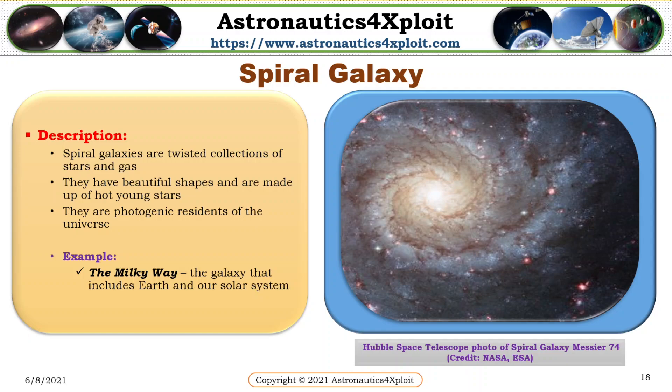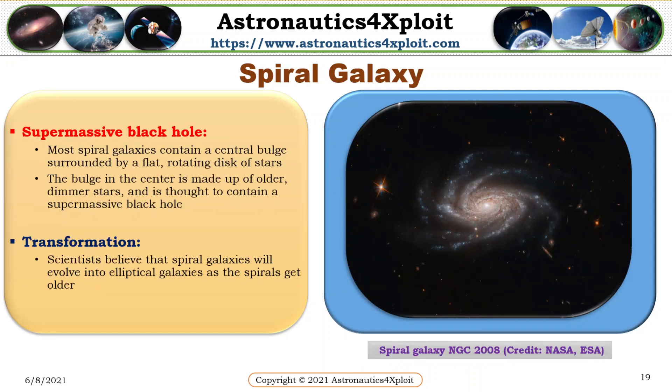Spiral galaxies are twisted collections of stars and gas. They have beautiful shapes and are made up of old and young stars. They are photogenic residents of the universe. An example of a spiral galaxy is the Milky Way, the galaxy that includes Earth and our solar system. This picture shows a Hubble Space Telescope photo of spiral galaxy Messier 74. Most spiral galaxies contain a central bulge surrounded by a flat rotating disk of stars. The bulge in the center is made up of older, dim stars and is thought to contain a supermassive black hole. Scientists believe that spiral galaxies will evolve into elliptical galaxies as the spirals get older. This picture shows spiral galaxy NGC 2008.